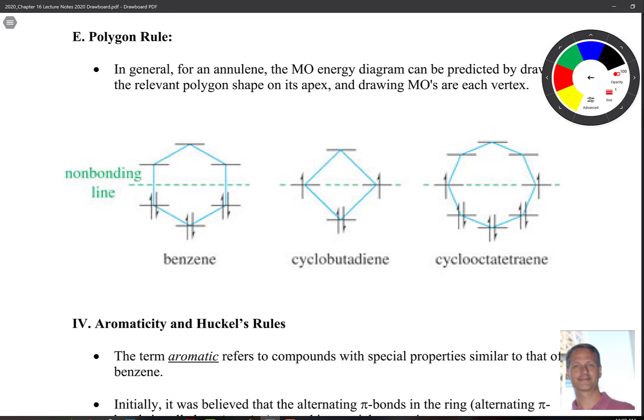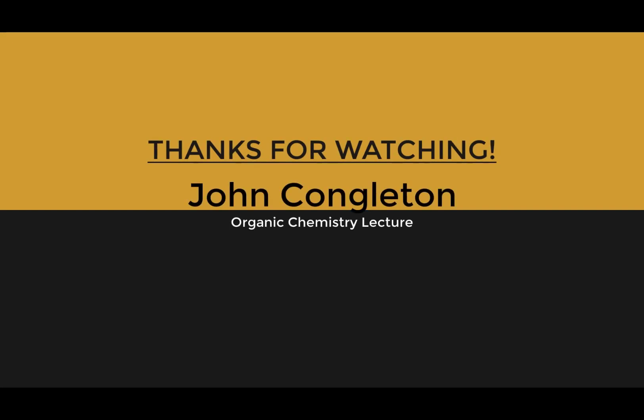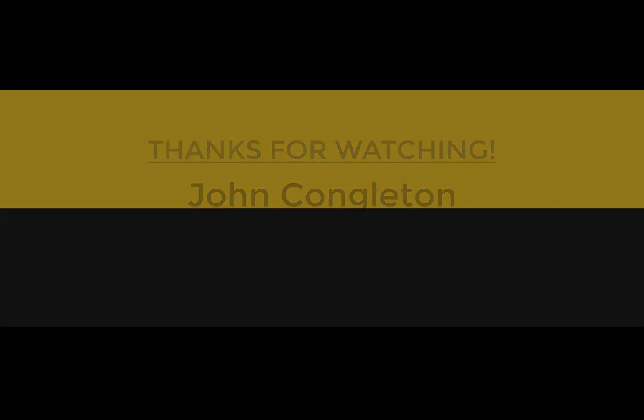So all of these observations with molecular orbitals can be summarized and organized into some rules. There's observations that were made, patterns recognized, and some rules that came up to make predictions whether or not we expect a molecule to be stable like benzene or unstable like the cyclobutadiene.